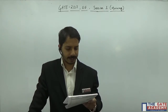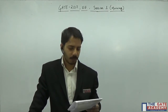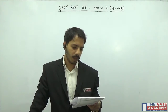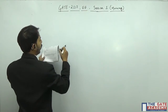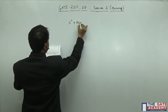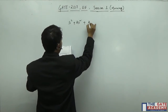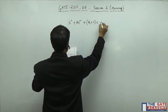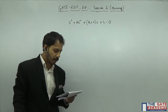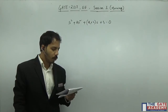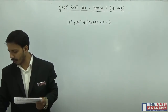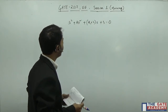This question is from control systems — it's also a one-mark question. It says a closed-loop system has a characteristic equation given as s³ + ks² + (k+2)s + 3 = 0. For the system to be stable, which of the following conditions should be satisfied? This is a somewhat easier question.